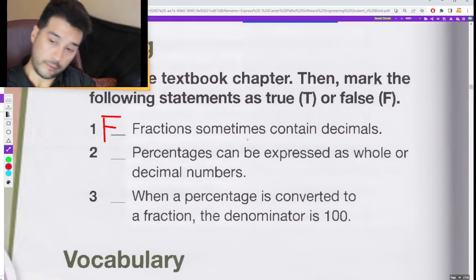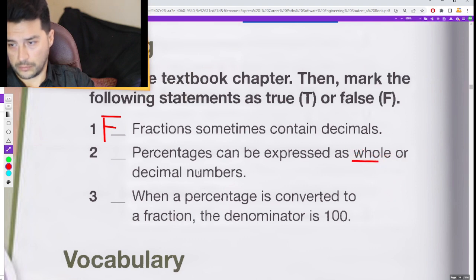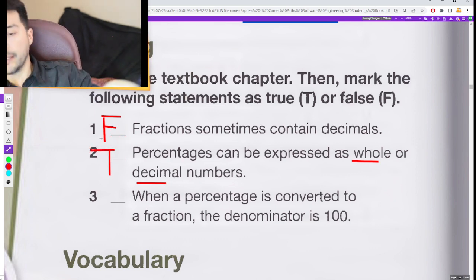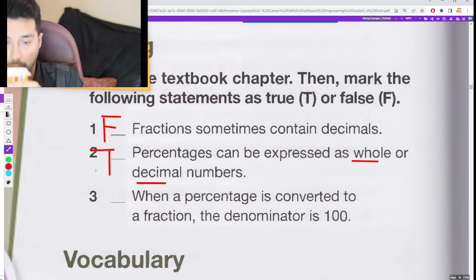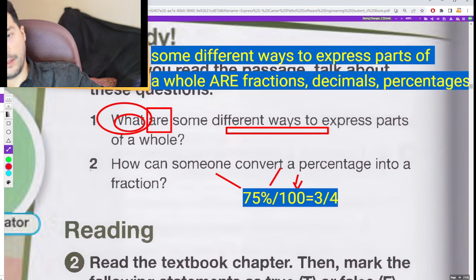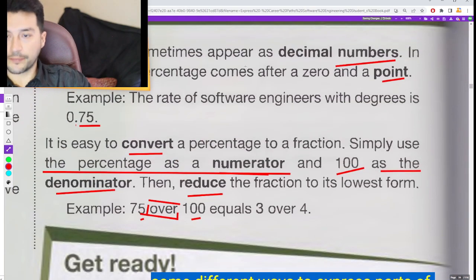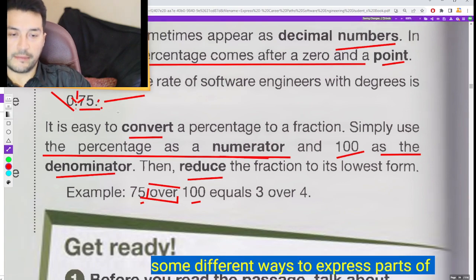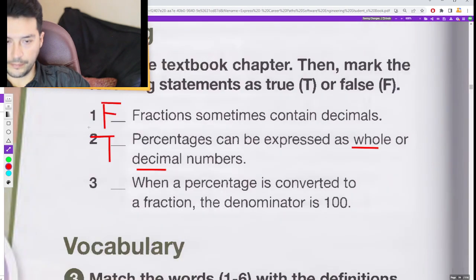Number two: Percentages can be expressed as whole or decimal numbers. Yup, that's true. Puedes cambiar un porcentaje, lo puedes expresar como decimal numbers o como un whole. Aquí está el décimo. ¿Recuerdan las instrucciones? The percentage comes after a zero and a point. Okay, zero, decimal point. Así se llama este point, right? ¿Se acuerdan de la clase de matemáticas? Decimal point. And the percentage 75. So that's true.